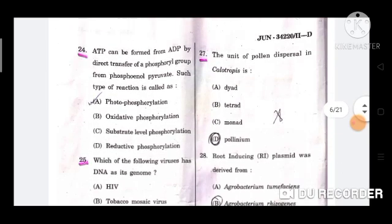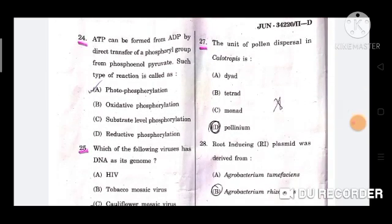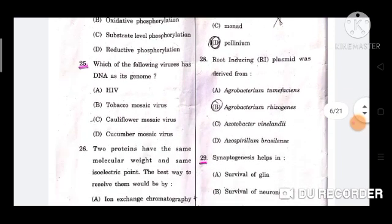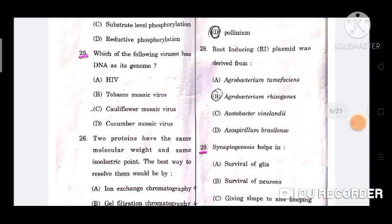Question number 24: ATP can be formed from ADP by direct transfer of a phosphoryl group from phosphoenol pyruvate. Such a type of reaction is called as? The correct answer is option A, photophosphorylation. Next question, question number 25: Which of the following viruses has DNA as its genome? The correct answer is option C, cauliflower mosaic virus.